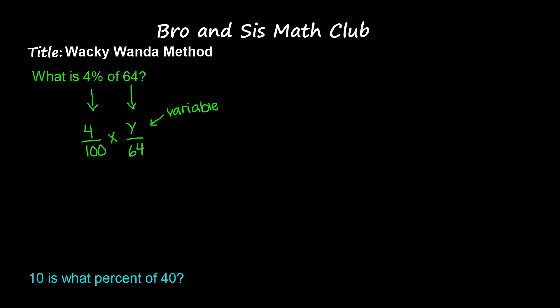Now what we need to do is cross multiply 4 and 64. So when we do that, 64 times 4 is going to give us 256, and then we have 256, and remember to take the 100.